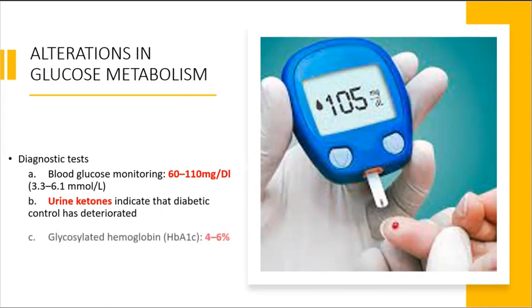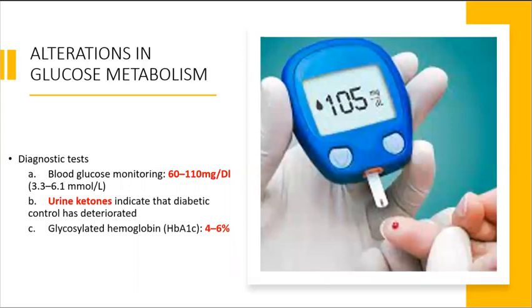We would also need to carry out glycosylated hemoglobin tests, which gives us an average level of the individual's blood sugar over the past three months. And we want to see the values between 4 to 6%, which is a normal range.